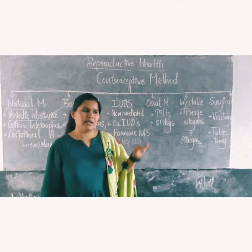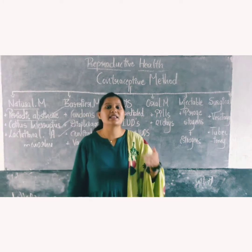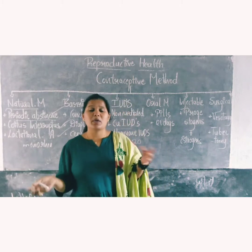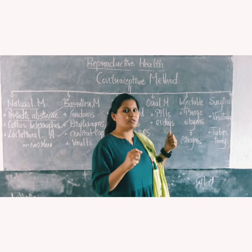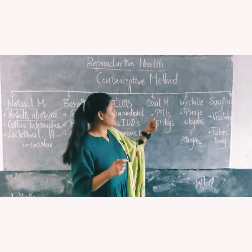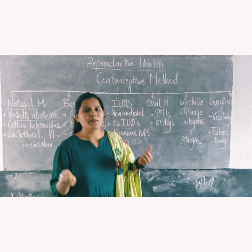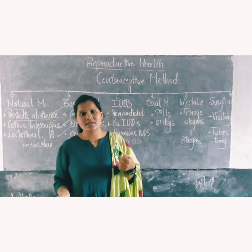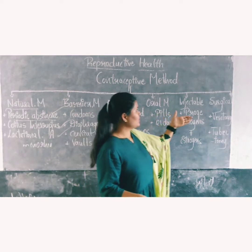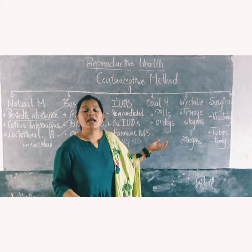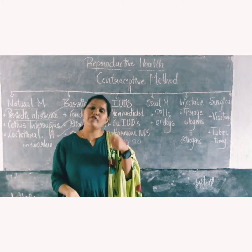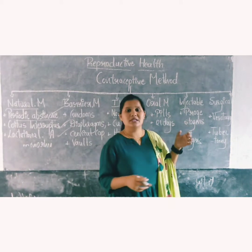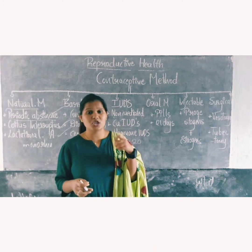Coming to the oral method — females take pills or tablets containing progestrone, or a combination of low dosages of progestrone and estrogen hormones. By taking these pills, females can prevent pregnancy. The tablets are taken regularly for 21 days or as prescribed by a doctor. In the case of injectables, those dosages of estrogen and progestrone are injected into the body rather than taken orally. The injection is given to females.